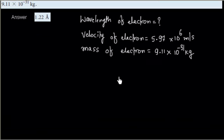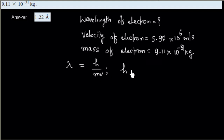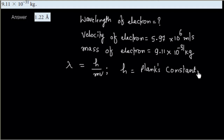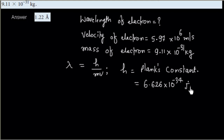We can apply the de Broglie wavelength formula, i.e., λ = h/mv, where h is Planck's constant, and its value is 6.626 × 10⁻³⁴ Joule·second.